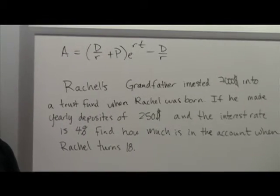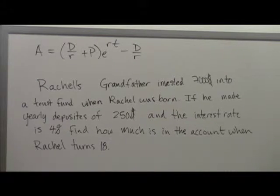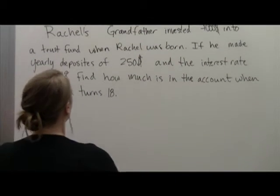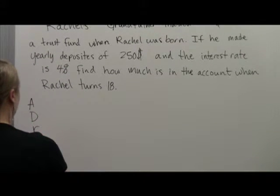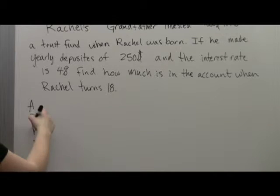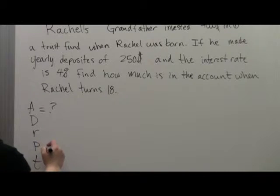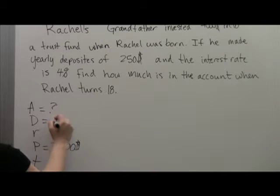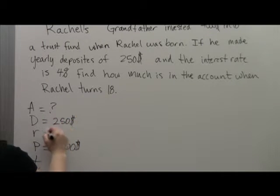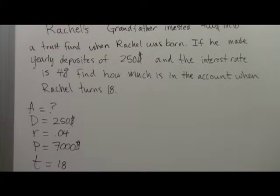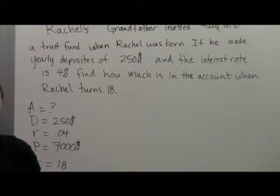If you see anything on the test that's about money, it's compounded continuously and you just use this formula. So first we need to have A, D, R, P, and T. We're looking for A because we want to know how much is in the account after a given time. Then we have $7,000 is how much he invested initially, so that's my principle. He's depositing $250 a year. It's at an interest rate of 4, so .04, and the time is 18 years.